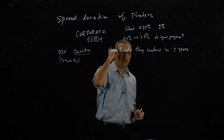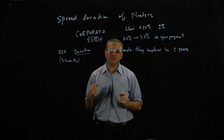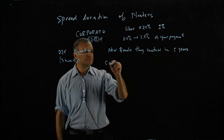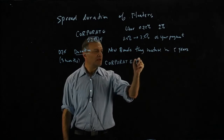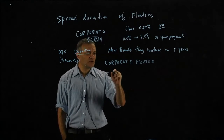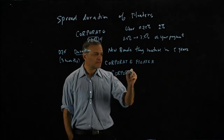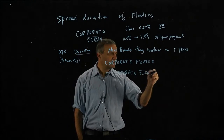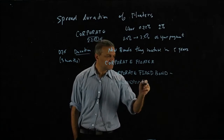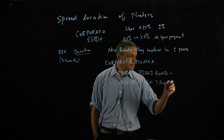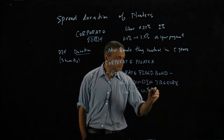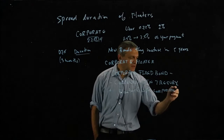But what about the spread duration of the floaters? The construction I used in class was hand-waving. What I want to do now is to solidify it a little bit. So we are going to describe a corporate floater as follows: a corporate floater equals a corporate fixed bond, minus the corresponding treasury with the same maturity, plus a treasury floater — a floater without the corporate component.